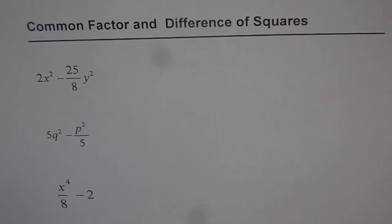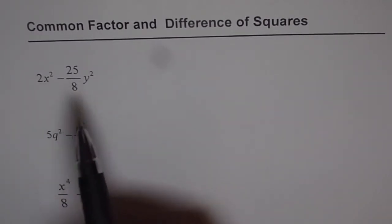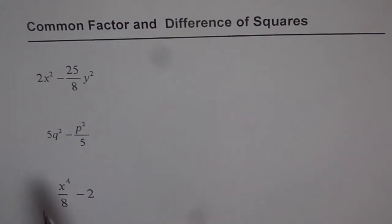Now these binomials are all actually kind of difference of squares. But to really make them difference of squares, we need to adopt another technique and that is common factor. So if you see, we have three of them here. 2x² minus 25 over 8 times y². 5q² minus p² over 5. And x to the power of 4 over 8 minus 2.